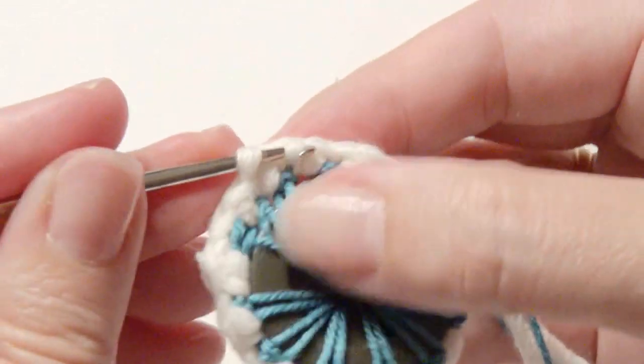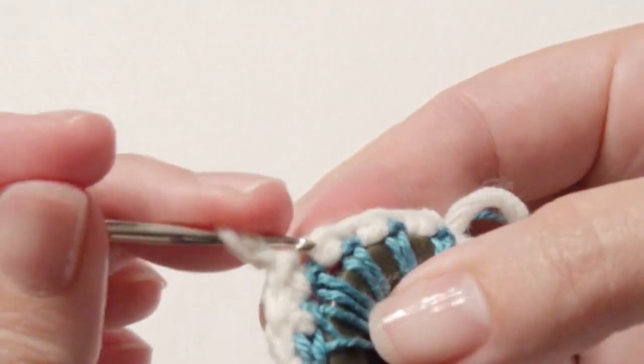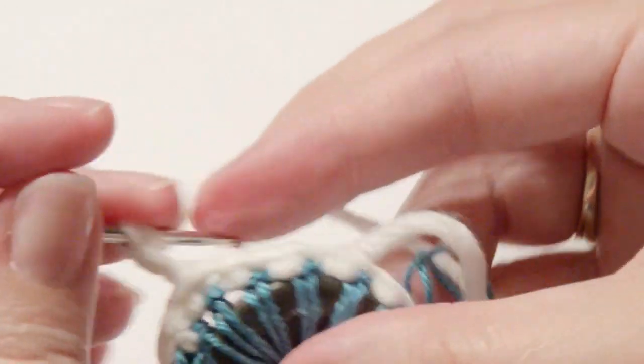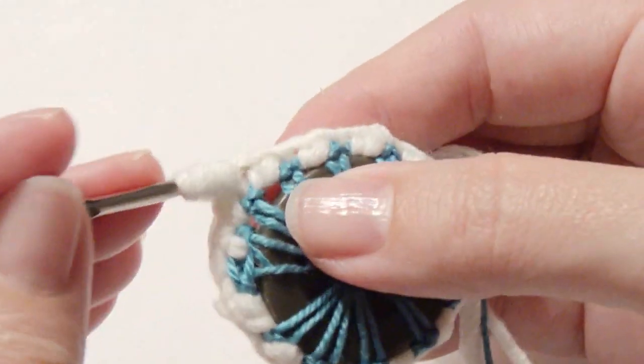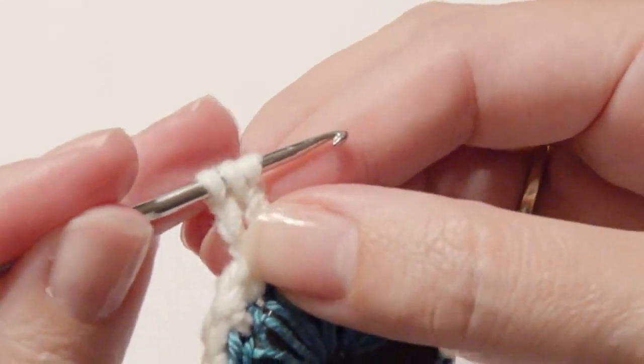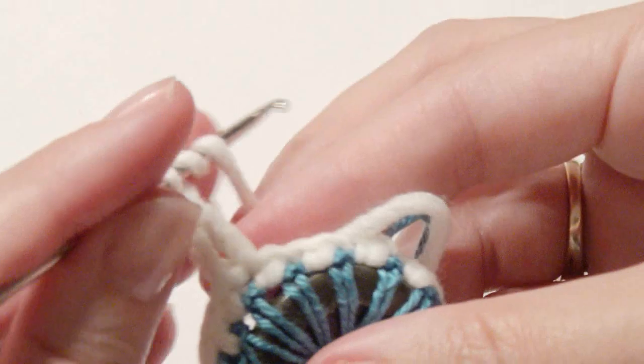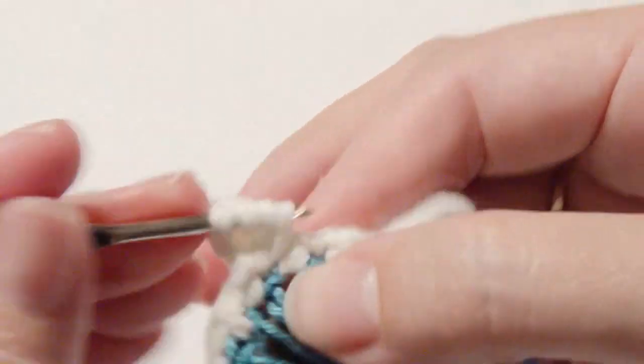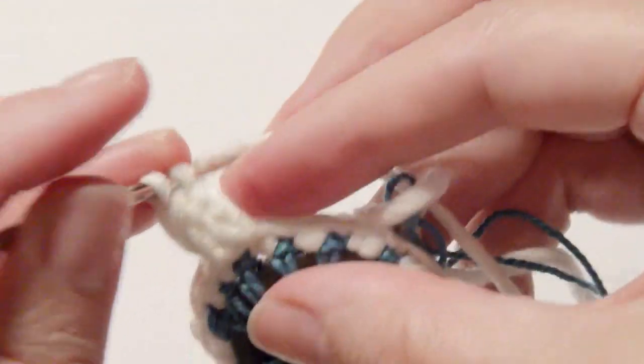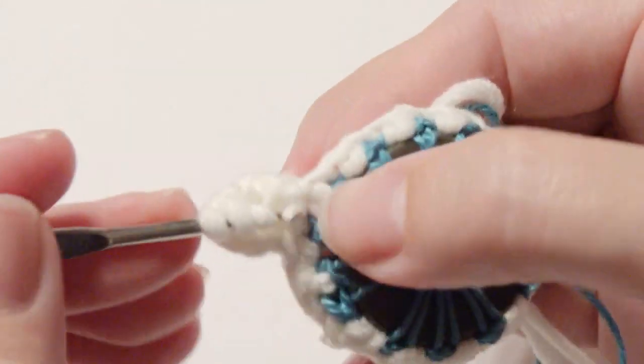So I'm going to start with a chain two and then yarn over twice and work a treble crochet. So pull through two loops, yarn over, pull through two loops, and then yarn over, pull through two loops. I'm going to work another treble crochet. I did up to six, so you can do more or less depending on how big you want your petal. Just continue that for this petal.